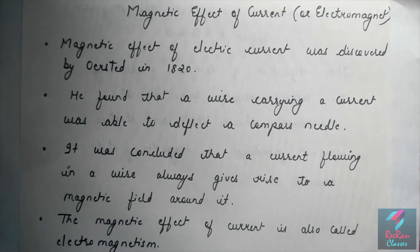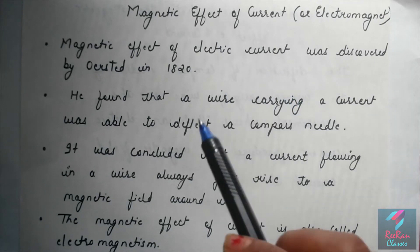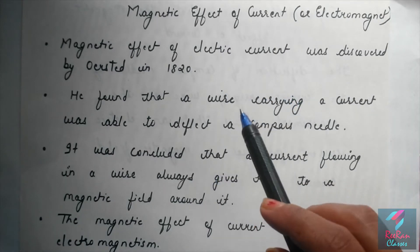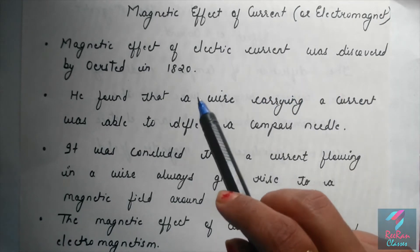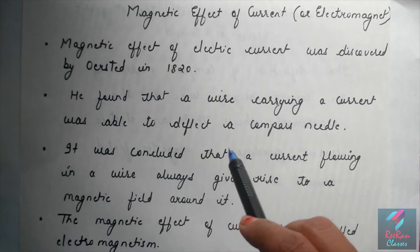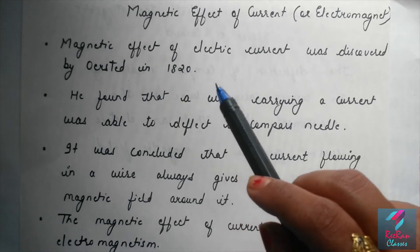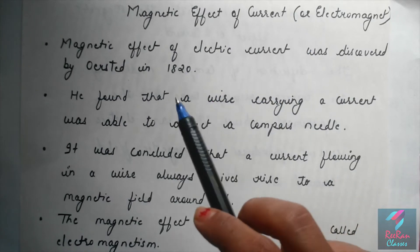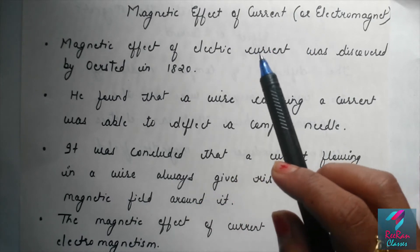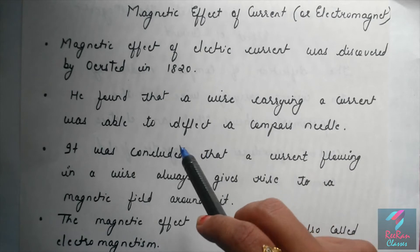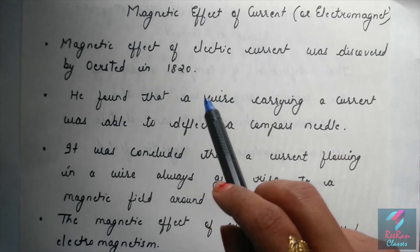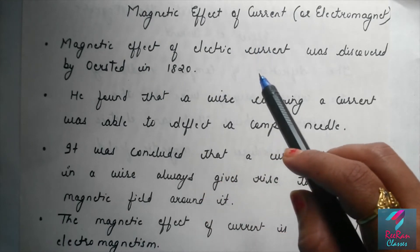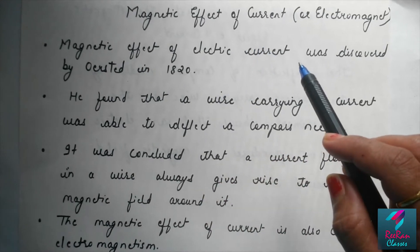Now we will talk about the experiment which was performed by a scientist named Orsted. He tried to establish a relationship between electricity and magnetism. So let us look at the experiment which he had performed.